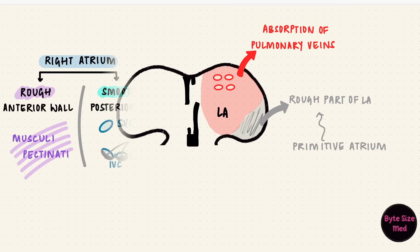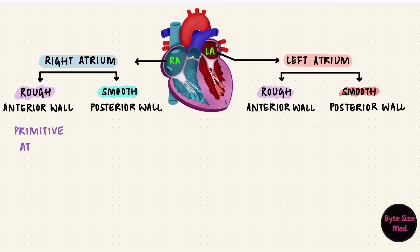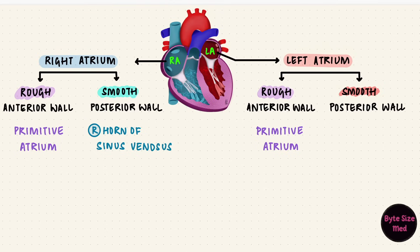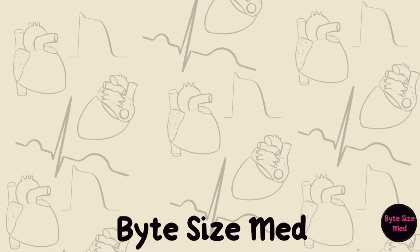To summarize: both atria have rough and smooth parts. The rough parts of both atria come from the primitive atrium. The smooth part of the right atrium is from the right horn of the sinus venosus, and the smooth part of the left atrium is from the absorption of the pulmonary veins. Now both atria have developed and they have separated. I hope this video was helpful. If it was, you can give it a like and subscribe to my channel. Thanks for watching, and I'll see you on the next one.